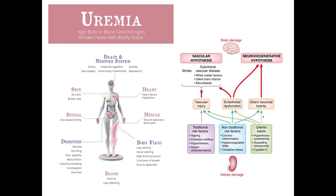Too much blood urea nitrogen can cause confusion, neuropathies, really dry skin, palpitations, muscle weakness, fatigue, chronic nausea, leg swelling, and anemia. All of these things go with renal failure.